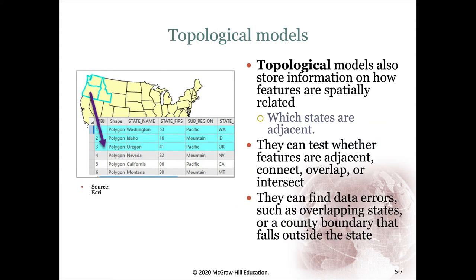If we want to do those sorts of analyses, we have to move on to a topological model. Topology means that these lines are built with intelligence. This line is only stored once and it knows that Washington is on one side and Oregon is on the other. This is really nice because now we can test for things like adjacency. We can ask, is Oregon adjacent to Washington? Just by knowing they share this one line, we know the answer is yes.